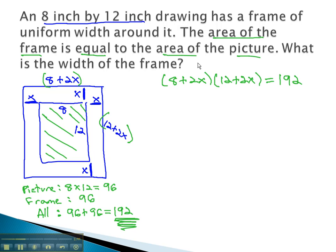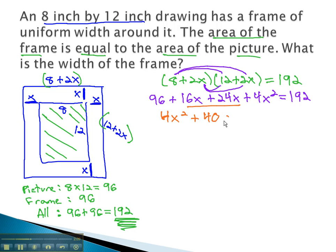We can start solving this by foiling out what's left to get 96, plus 16x, plus 24x, plus 4x squared, equals 192. Combining like terms and putting things in order gives us 4x squared, plus 40x, plus 96, equals 192.